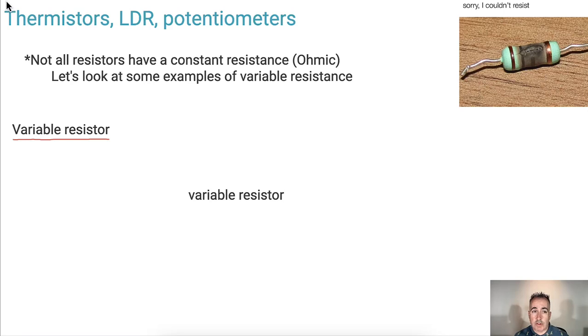In this video we'll be talking about what happens to resistors when they don't follow Ohm's law. Not all resistors follow that. If they follow Ohm's law they're called Ohmic. But if they don't follow it, they have a variable resistance. I put those in here - sorry I couldn't resist.